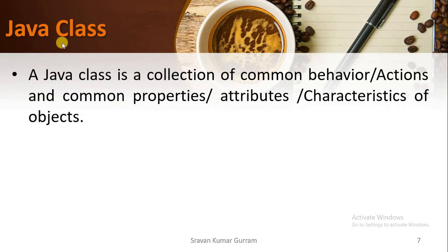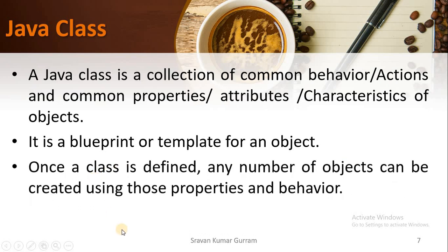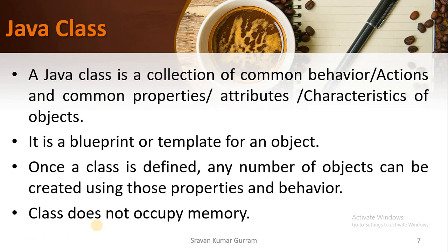A class in Java is a collection of common behaviors or actions and common properties, attributes, or characteristics of the objects. A class is a blueprint or a template for an object. Once a class is defined, you can create any number of objects as per your requirements, and every object has those properties and behaviors. When you create a class, the class does not occupy memory because it is just like a template.